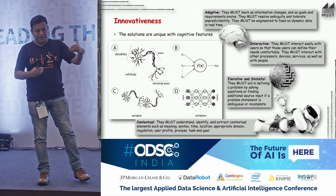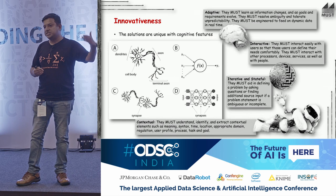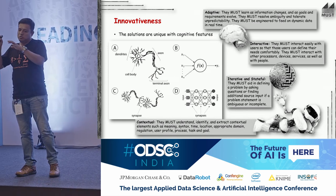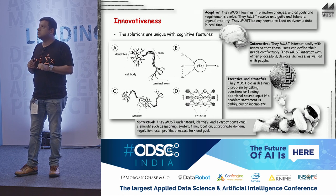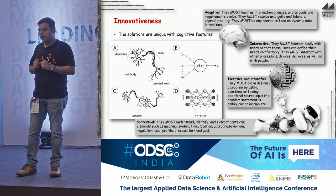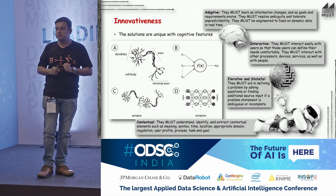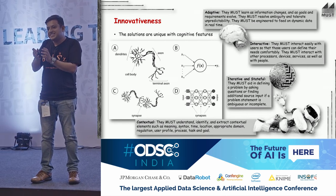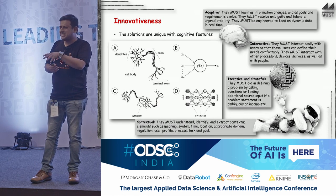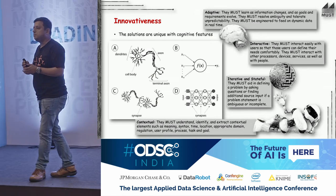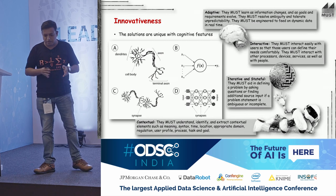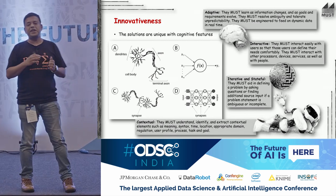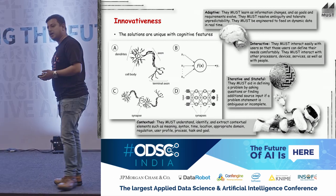The projects we're thinking about should be adaptive in nature, interactive, iterative, and stateful. Based on what happens next, our decision may change — like if you're feeling very cold in this room, you might decide to take a tea break specifically to get a warm tea. Sometimes decisions are fuzzy, not exactly binary. In our life, everything is not always binary, and they are also contextual.